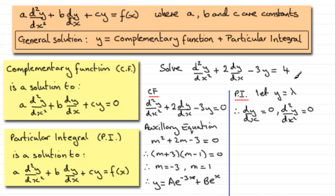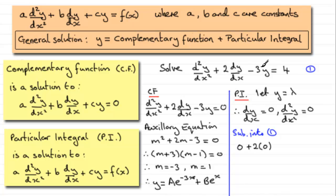Substituting these values into the original equation: 0 + 2(0) − 3λ = 4. So −3λ = 4, which means λ = −4/3.